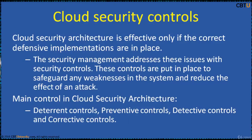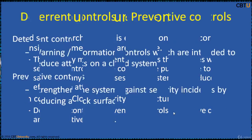Cloud security architecture is effective only if the correct defensive implementations are in place. The security management addresses these issues with security controls. The controls are put in place to safeguard any weakness in the system and reduce the effect of an attack. The main controls in cloud security architecture are deterrent controls, preventive controls, detective controls and corrective controls.